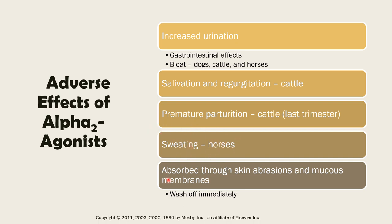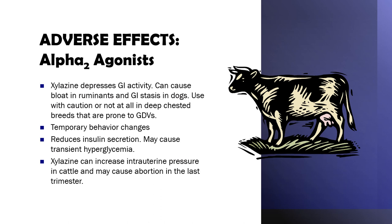Alpha-2 agonists are absorbed through skin abrasions and mucous membranes, so if they get onto the skin, wash it off immediately — particularly for humans administering the drug. The drug can cause depression of GI activity, bloat in ruminants, and GI stasis in dogs. There is also temporary behavior change, reduction in insulin secretion, and it can cause hyperglycemia. This is why it is contraindicated in diabetic patients. It can also cause increased intrauterine pressure in cattle and may cause abortion in the last trimester of pregnancy.